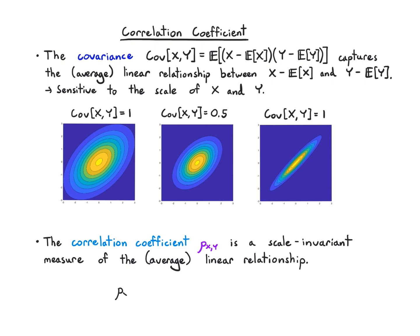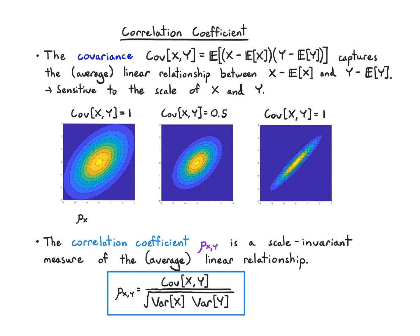We define rho_xy as the covariance divided by the square root of the variance of x times the variance of y. In these examples, the correlation coefficient was 0.5 for the first two and 0.95 for the third. The correlation coefficient is closer to 1 if a line with positive slope does a really good job of capturing the distribution — the right distribution scores 0.95 and is almost a line, whereas the left two have more variation not captured by a line.